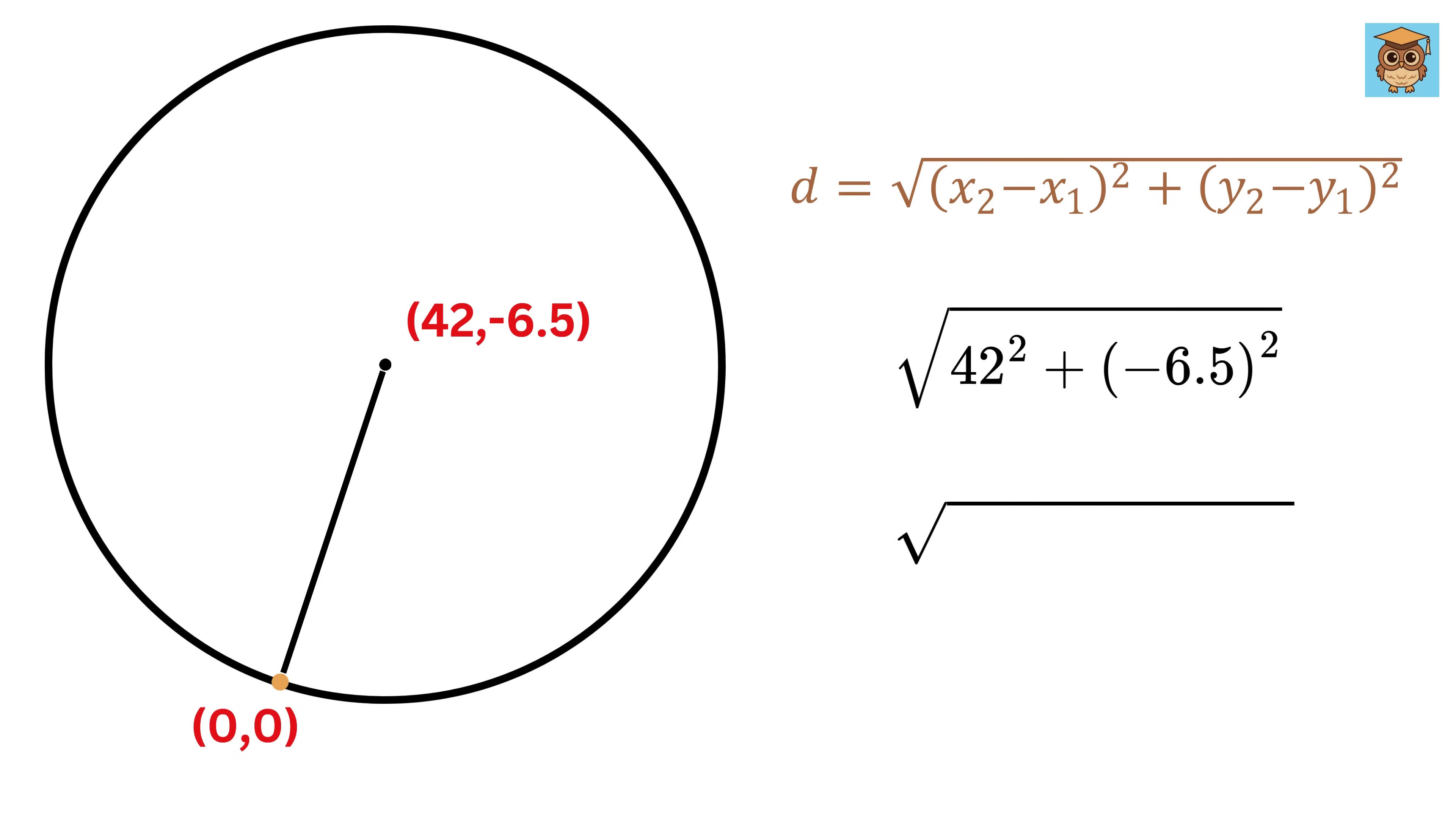That is the square root of 1764 plus 42.25. That gives us the square root of 1806.25, and the square root of that is 42.5 units.